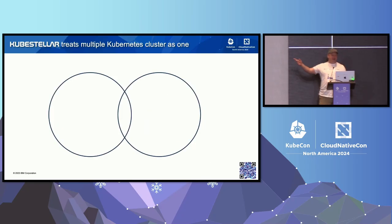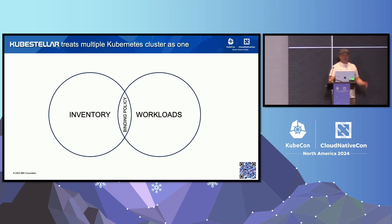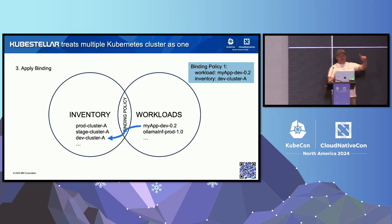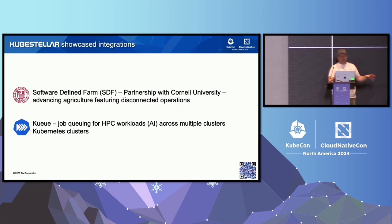Here's how it basically works in KubeStellar: we have inventory, workloads, and binding policies. You register your clusters as inventory, you deploy your workloads using the standard kubectl API — but you only do it once, not three times. Then you set up your binding policy: 'I want this particular app on this particular cluster.' You do that once and you never have to do it again.